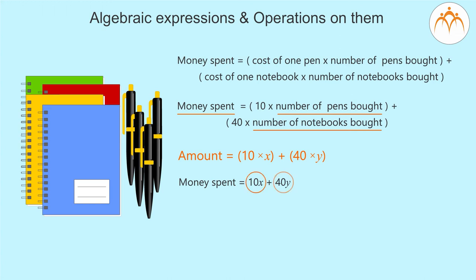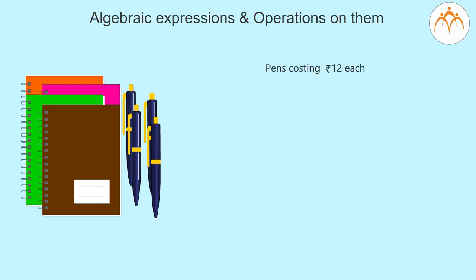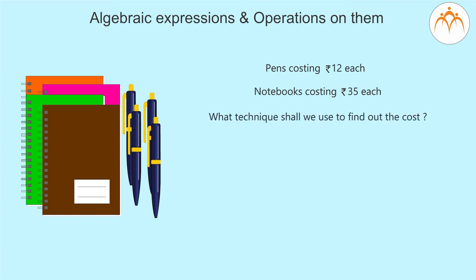In the algebraic expression 10X + 40Y, 10 and 40 are the coefficients of X and Y respectively. Now, my sister bought some pens costing rupees 12 each and some notebooks costing rupees 35 each, and coincidentally she bought the same number of pens and notebooks as I did. Using the same technique, in the formula the coefficients of X and Y would be 12 and 35 respectively. So the amount my sister spent would be 12X + 35Y.